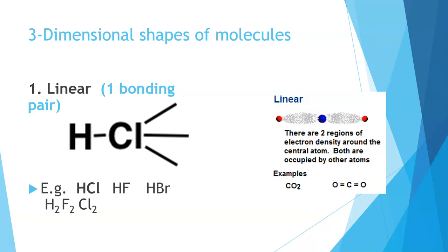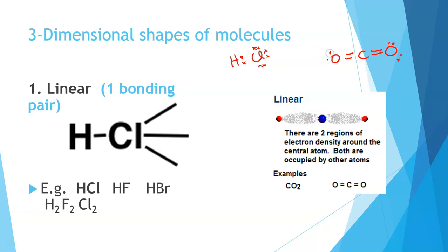When electrons are able to arrange themselves as far apart as possible with even repulsion, we will have a linear molecule. Consider only the bonding pairs — HCl has no non-bonding pair to bonding pair repulsion, so with only two atoms we see a linear bond. We see this in HCl, HF, HBr, Cl2, F2, and also in carbon dioxide, which has no non-bonding pairs on the central atom. The double bonds are opposite each other, as far apart as they can get, giving a linear molecule.